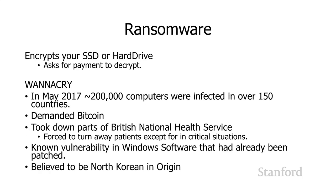Ransomware, when it gets on your computer, encrypts your entire solid state drive or hard drive and asks for payment to decrypt your information. It locks your information and requires payment, typically in Bitcoin, to unlock your device. An example is WannaCry, released in 2017, which infected over 200,000 computers in over 150 countries. It demanded Bitcoin payments from $300 to $600 depending on how soon you paid, and it took down large parts of the British National Health Service, forcing them to turn away patients except in critical situations.